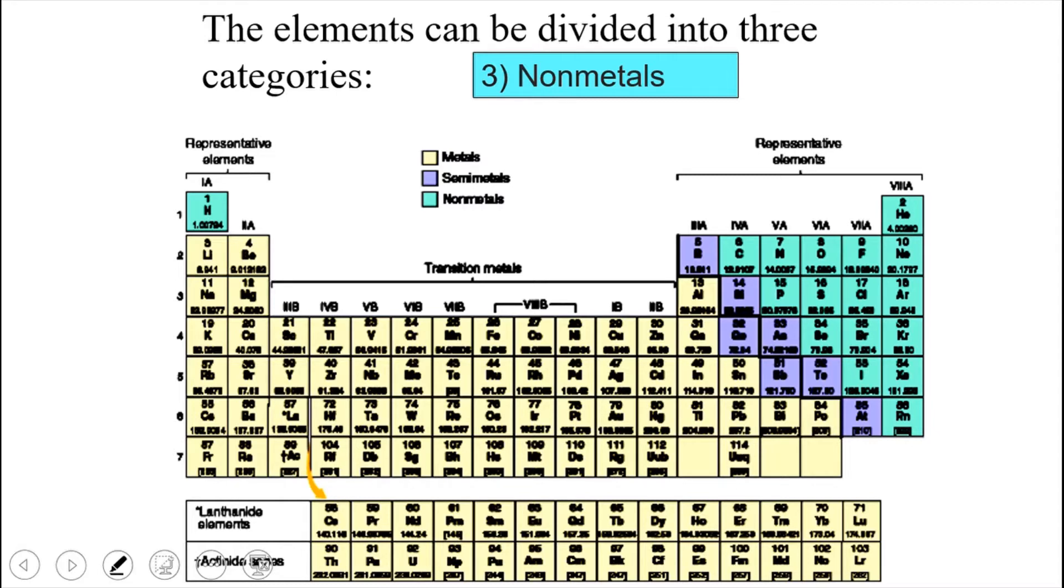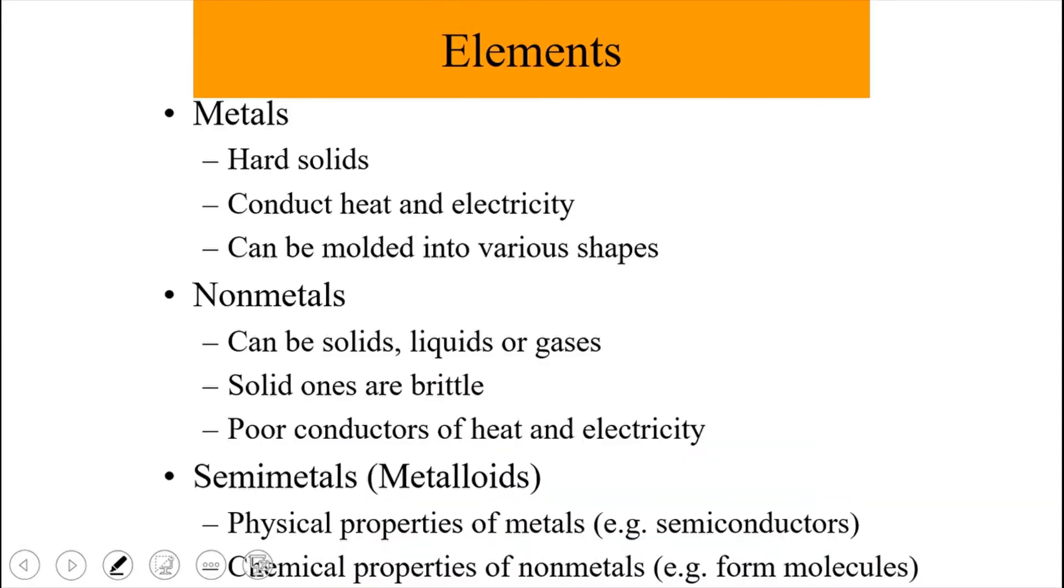So those are the three major categories. Now these categories of elements, in general, have different properties. The metals are hard solids and they conduct heat and electricity. Non-metals can be solids, they can be liquids, they can be gases, but those that are solid are typically somewhat brittle. Of course, you can have the exception of carbon, where its diamond form is extremely hard.